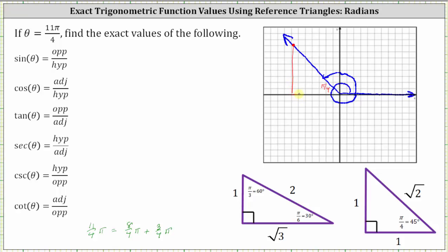So now we have the reference triangle, which we can use to determine all six trig function values. Notice how this is a 45-45-90 reference triangle, and therefore we can label the two legs one and the hypotenuse square root two.